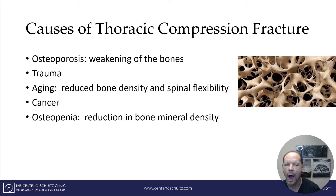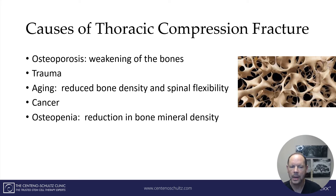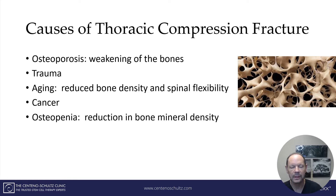The number one cause of a thoracic compression fracture is osteoporosis — basically a weakening of the bones. Other causes include trauma, aging — as we get older we're less flexible and there's decreased bone density. Cancer can also cause a fracture. And then osteopenia, which is basically a reduction in bone mineral density and is a precursor of osteoporosis.